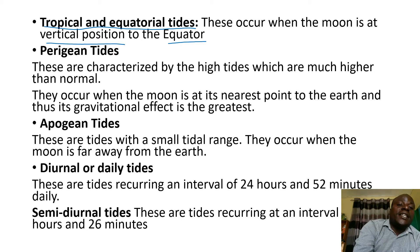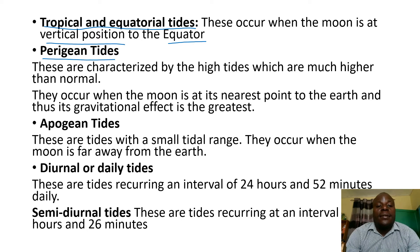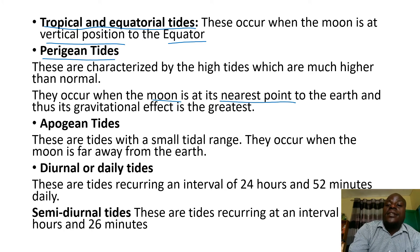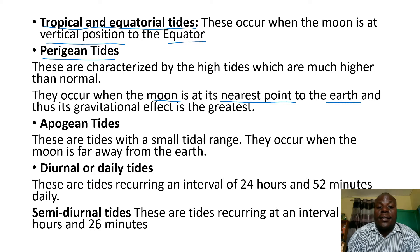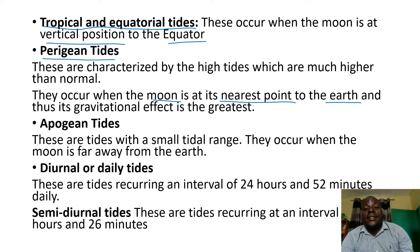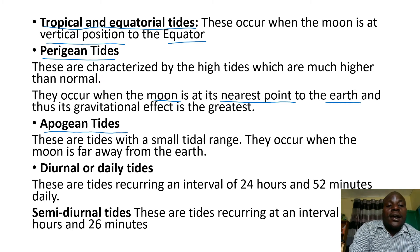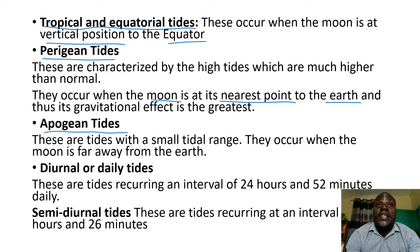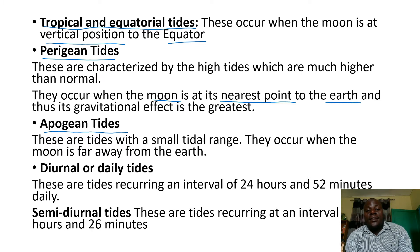We have perigean tides; these occur when the moon is at its nearest point to the earth, meaning the gravitational force is high. They are characterized by high tides which are much higher than normal. We also have apogean tides — these are tides with a smaller tidal range; the difference between the highest and lowest tide is small.